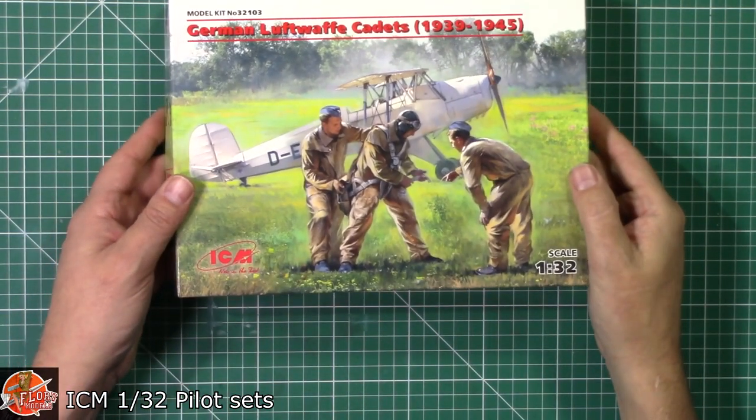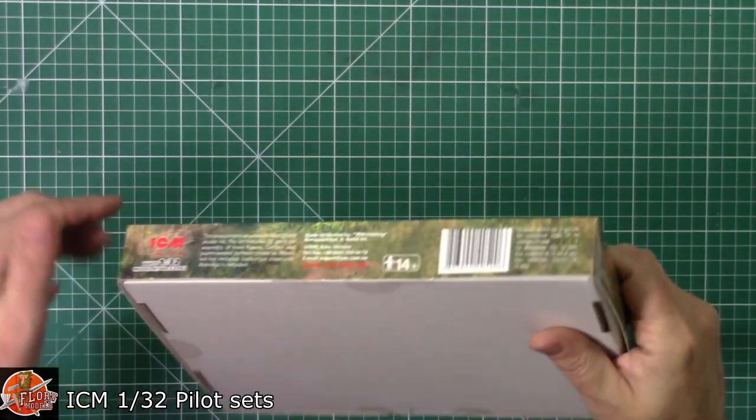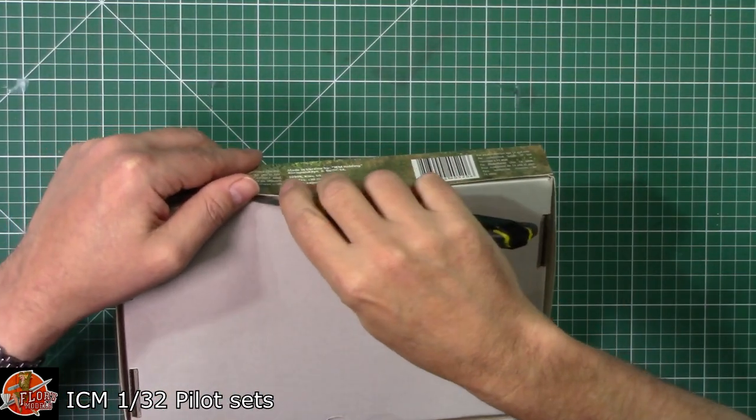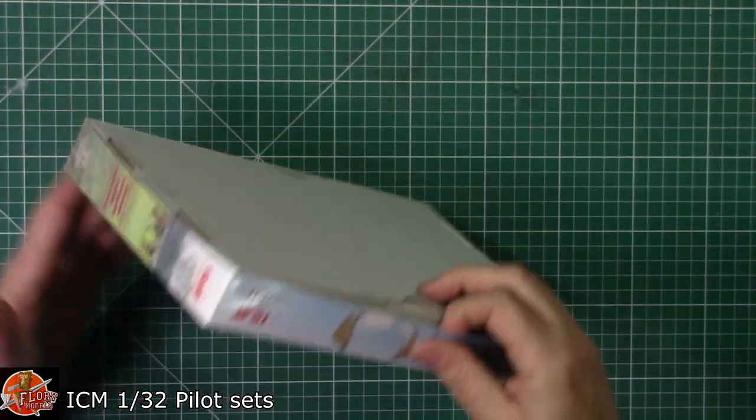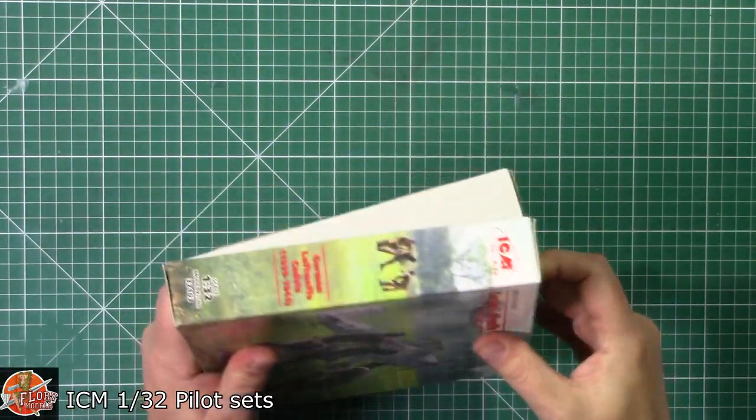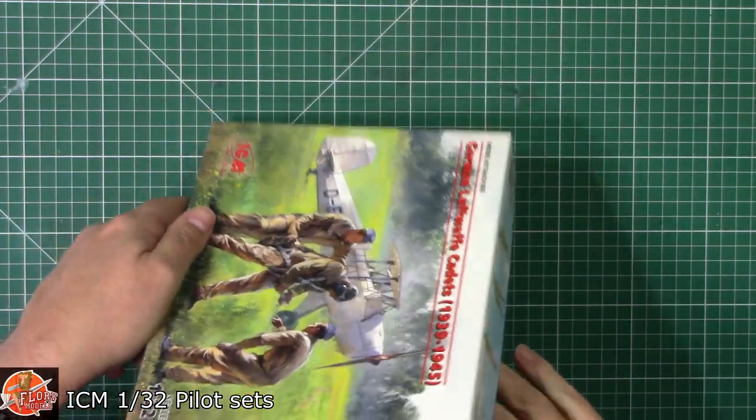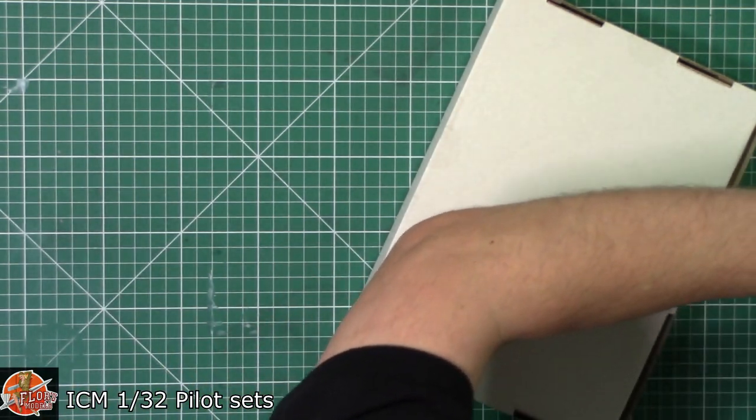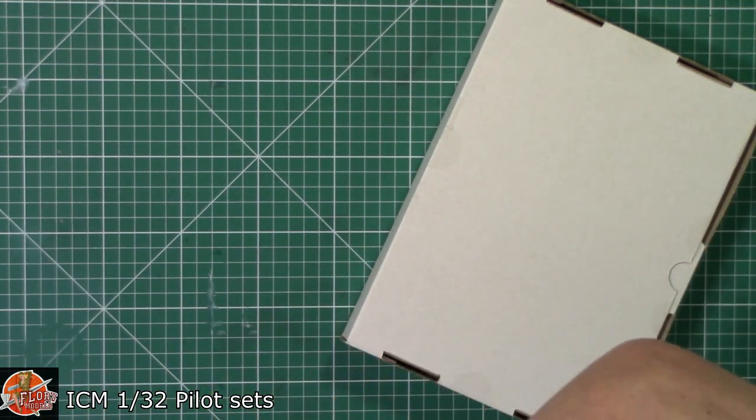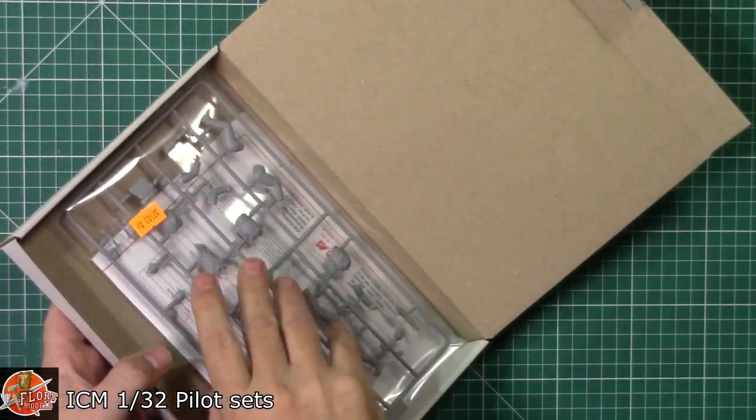So let's have a look at the other one. This is for the actual Luftwaffe Cadet set as well. Obviously getting his harness fitted in. And again, this one is sealed. Let me get that open. Get that in the box. There we go.